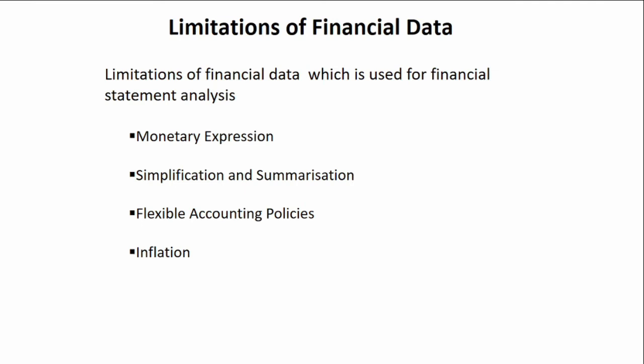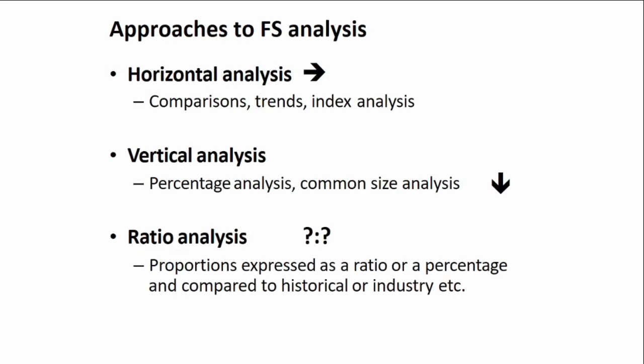The last limitation of financial data is inflation. Inflation leads to a decline in purchasing power and reduces the standard of value of the currency, and these changes are not necessarily reflected in the accounting data. For example, when measuring returns, you must be careful when comparing current returns with assets purchased 20 years ago. The next section looks at the various approaches to financial statement analysis: horizontal analysis, vertical analysis, and ratio analysis.